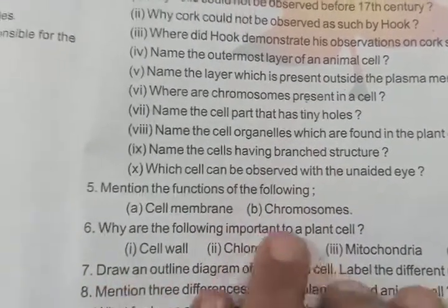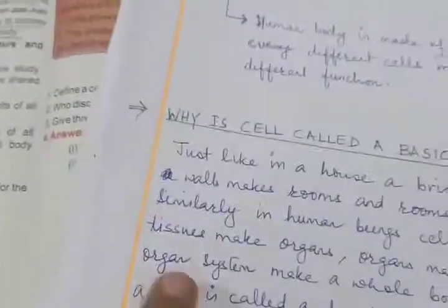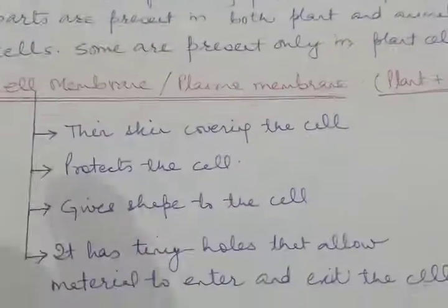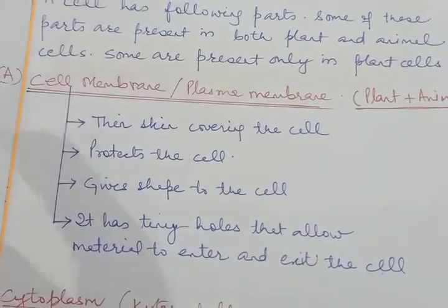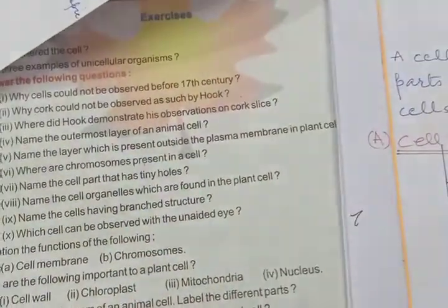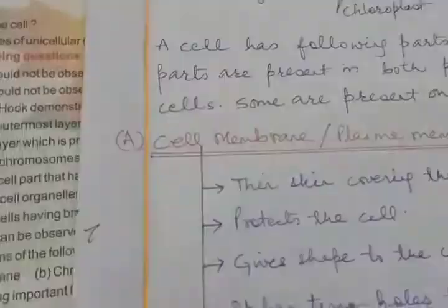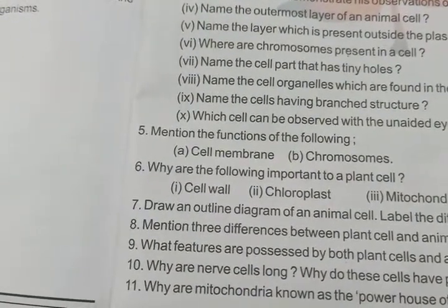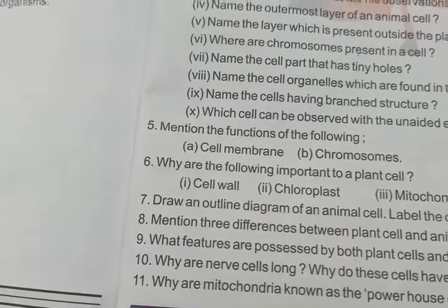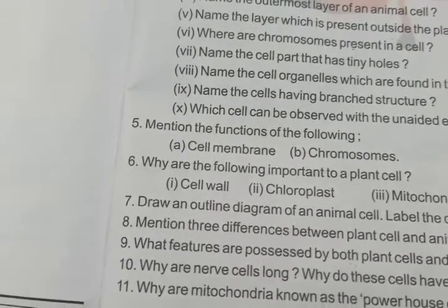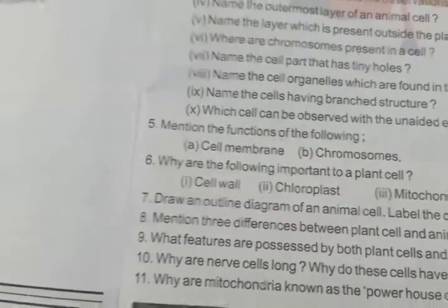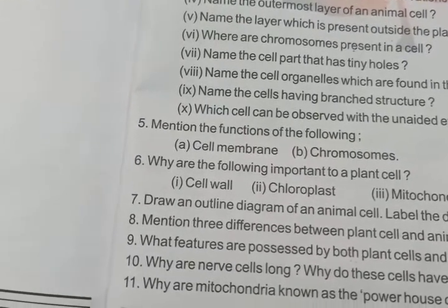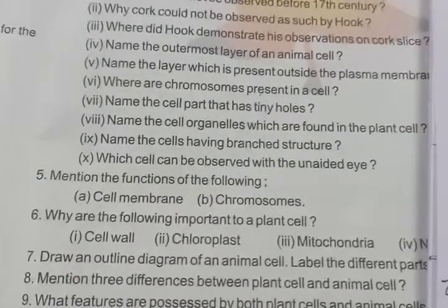Mention the functions of the cell membrane — I have written all of this in the notes. The function of chromosomes: chromosomes are thread-like structures found in the nucleus. These chromosomes decide our DNA. Our hereditary characteristics — the characteristics which come from parents to their children — are decided by chromosomes. I will give you these notes when I send you the questions and answers.